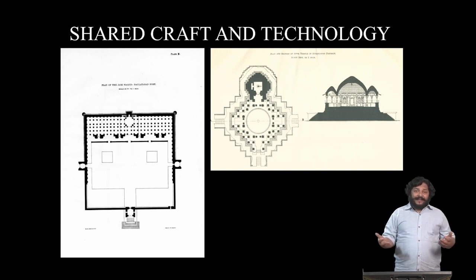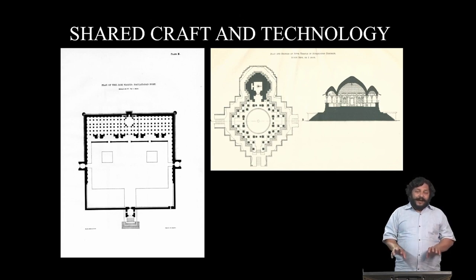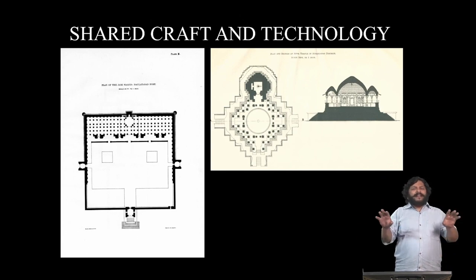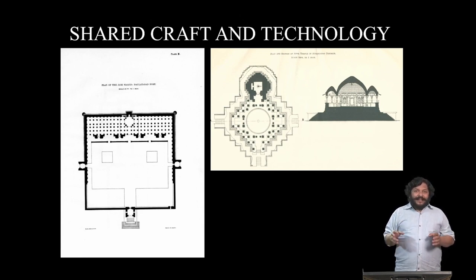Yet if one can read the masonry as well as one can read texts, there is a greater story to be told — a story that unifies buildings that are Hindu, Muslim, Jain, and Christian, for a given period and region. In a given region, at a given time, the same guilds of masons are working for all patrons, as evidenced in the temple at Anwa and the Jami Masjid at Daulatabad. Both have a completely different design philosophy, but the actual construction of a dome resting on an octagon is where local masons fail in copying modules from Gujarat — and therefore we know it is the same guilds of masons working at both places.